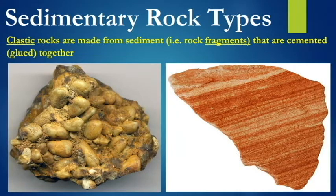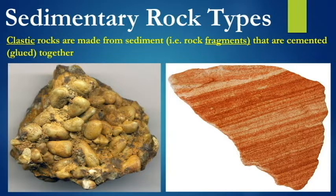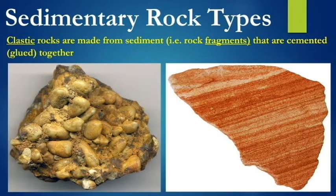Alright, so clastic rocks. When we say the word clastic, we're saying fragments — a clast is a fragment. So clastic rocks are fragments that have been cemented together. The word cement means glue. You can see over here on the bottom left it's very obvious how those sediments have been glued together — there is a natural glue that is bringing them all together.